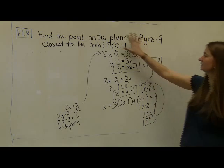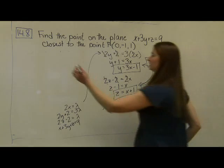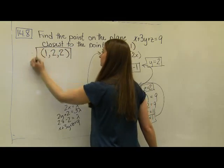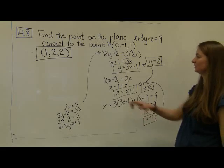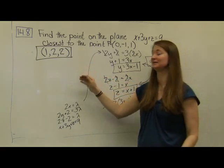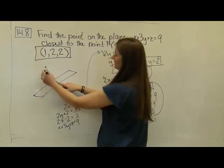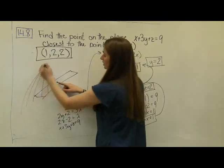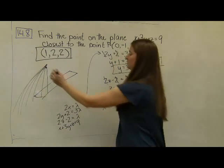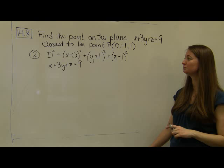The Lagrange multiplier method gives us the solution x equals 1, y equals 2, z equals 2. From a geometric sense, if we were only going to find one max or min point, it makes sense because all others just keep getting bigger and further away — there is no maximum distance from a point to a plane, only a minimum. And that's the point we just found.